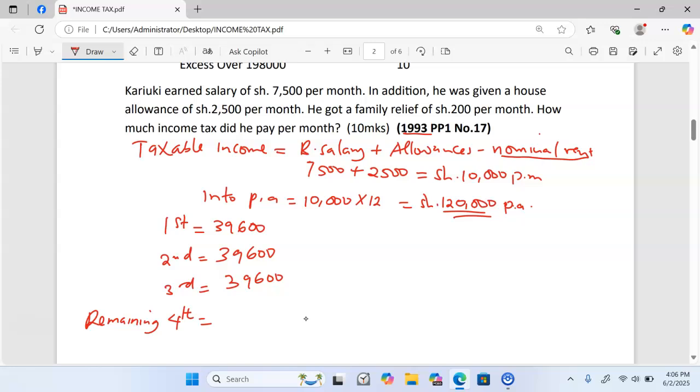Then now the fourth bracket we have to add what we have taxed in the first, second, and the third, then we less from 120,000. In this case we are going to take 120,000 minus 39,600 times 3, and whatever remains here will be equal to 1,200. This is what we are going to tax in the fourth bracket.